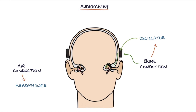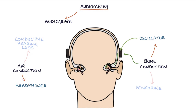Audiometry results are recorded on an audiogram. Audiograms can help identify and differentiate between conductive and sensorineural hearing loss, and we're going to talk in more detail about how this is done.